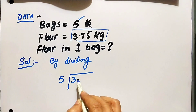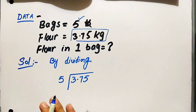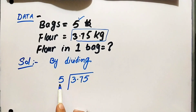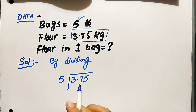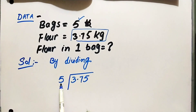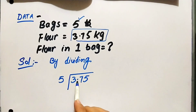Three point seven five divided by five — the divisor and dividend. When the divisor is larger than the dividend, we can place a zero and multiply. The divisor goes into the dividend digit by digit. We place a zero and multiply accordingly.